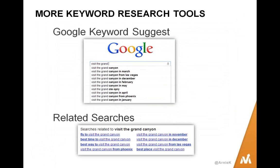Right there at Google Suggest you can come up with dozens if not hundreds of ideas. If it's not enough, scroll to the bottom of the search results page where you see related searches — there are more ideas there, like "best time to visit the Grand Canyon" and "visit the Grand Canyon from Las Vegas." Keep that last one in mind — I'm going to come back to it.